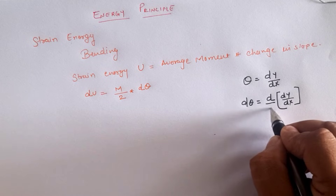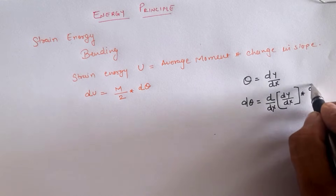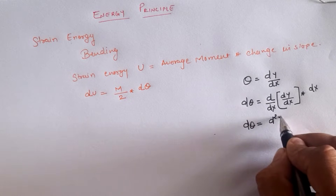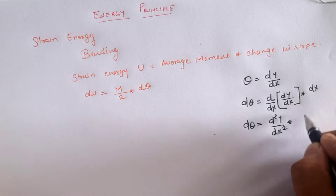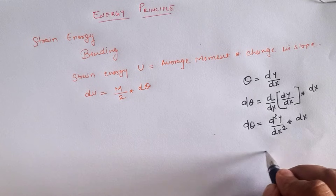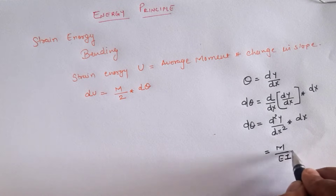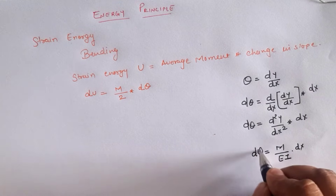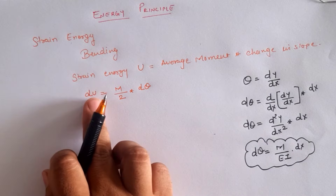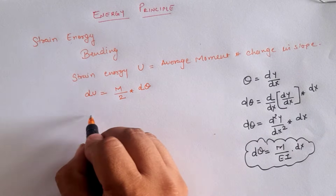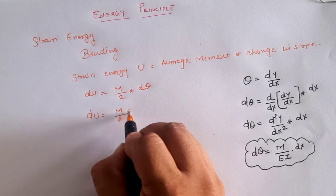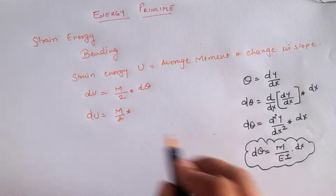If we divide and multiply by dx, then dθ can be written as (d²y/dx²)·dx. According to Euler's equation, d²y/dx² is M/(EI), hence dθ can be replaced by (M/EI)·dx. So our strain energy equation becomes dU = (M/2)·(M/EI)·dx.